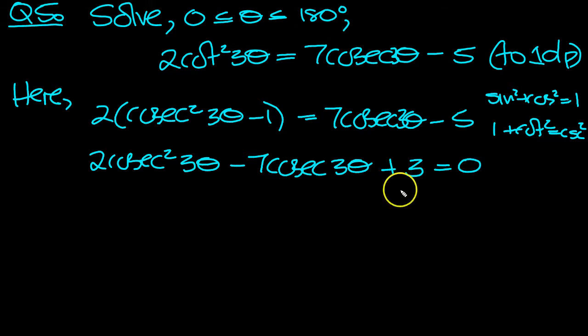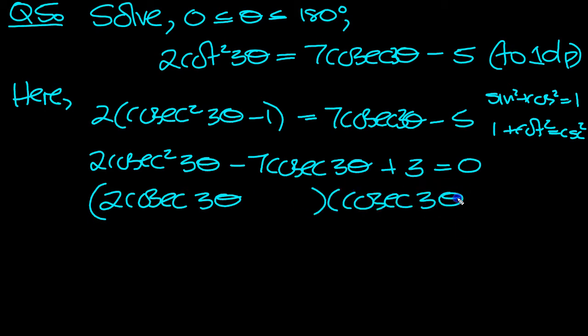So we now need to factorise 2 cosec squared 3 theta minus 7 cosec 3 theta plus 3. It has to be 3 and 1 if it factorises. So if we put the 3 here and the 1 here, do a minus and a minus, we get minus 6 minus 1 as the middle term, so it gives minus 7.